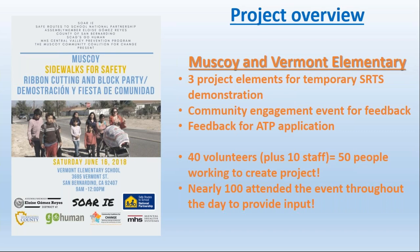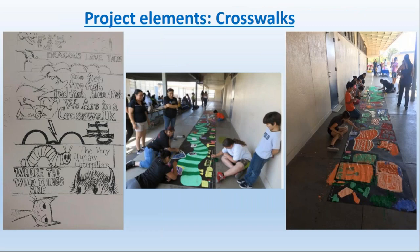We created an event flyer with all the partners we brought together. We wanted to use it as a feedback tool to engage the larger community about whether they wanted to see these projects become permanent. Our end goal was California's Active Transportation Program, a way to get investment into a community that has literally seen decades of disinvestment. For our project, we engaged about 40 volunteers made up of parents and students, plus 10 staff — about 50 people total. The event took place on June 16th, and we had about 100 folks come and provide input.